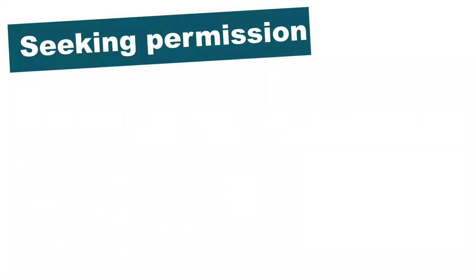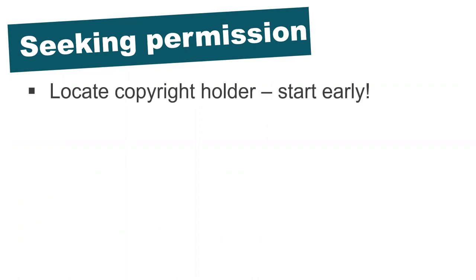Best practice when wanting to use third-party materials is to seek permission from the copyright holder, as this will ensure that your use is fully covered. Any researchers wanting to publish work containing third-party materials will need to do this, including when sharing their thesis online via Apollo, the university repository. It's best to start trying to obtain permission early — ideally as soon as you realize you're likely to need to use something. Sometimes the process can take time, and by starting early you can avoid a last-minute rush. If you're not sure who the copyright holder is, the publisher is usually the best place to start, and they can always point you in the right direction if it's not them.